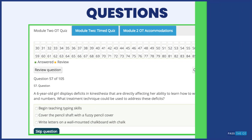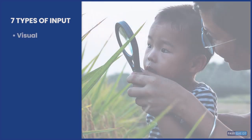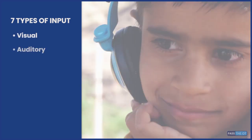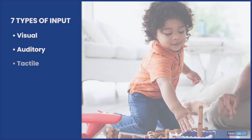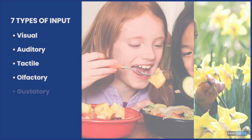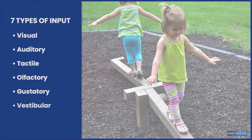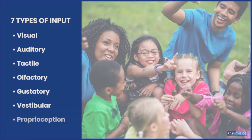In regards to sensory input, there are seven different types: visual, which is sight; auditory, which is sound; tactile, which is touch; olfactory, which is smell; gustatory, which is taste; vestibular, which is balance; and proprioception, which is position in space. That last one is the one most OTs may have a harder time with, so I'll make sure to go over it in more detail.